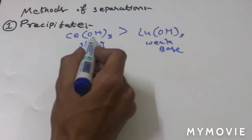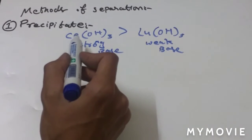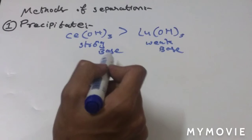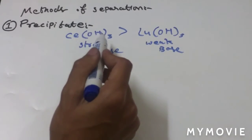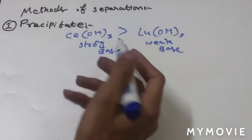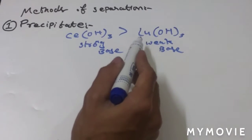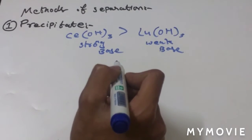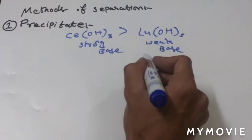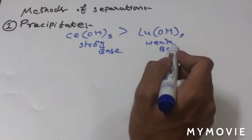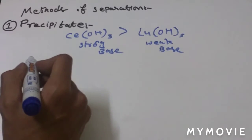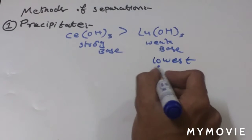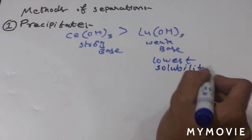Cerium hydroxide forms a weak covalent bond with OH, so it is a strong base because it can easily donate OH to any acid and in water. The weakest base, Lu(OH)3, has the lowest solubility product and precipitates first, while La(OH)3 has the highest solubility product.